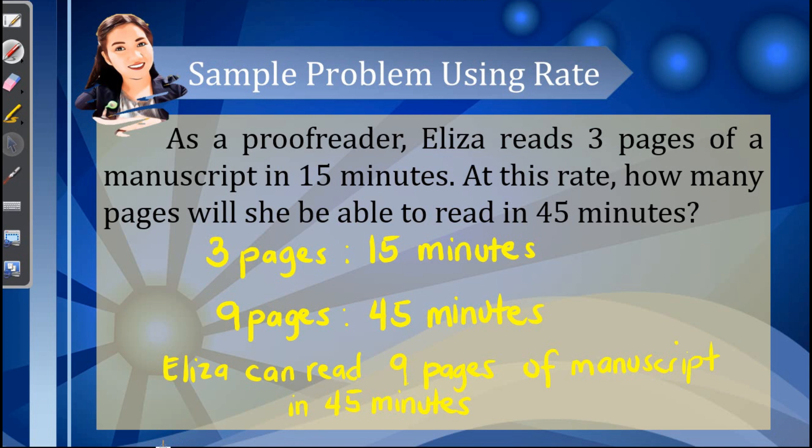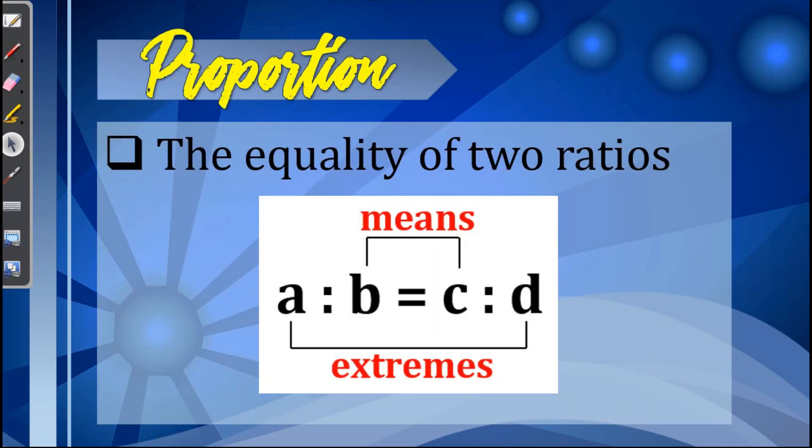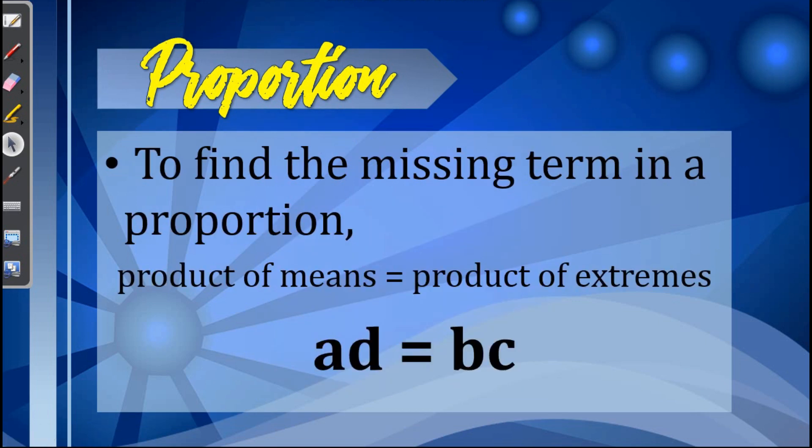So with this we can now conclude that Eliza can read 9 pages of manuscript in 45 minutes. Next, 2 ratios, 3/4 and 12/16, are said to be equal. A statement that would say that two ratios are equal is called a proportion. The product of a and d are called extremes, and the product of the inner terms b and c are called means. If we are looking for the missing term of a proportion, we just have to equate the product of the means and the product of the extremes. So in symbols we have a times d equals b times c.